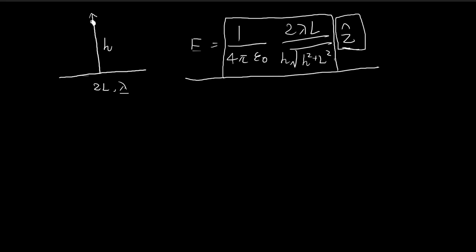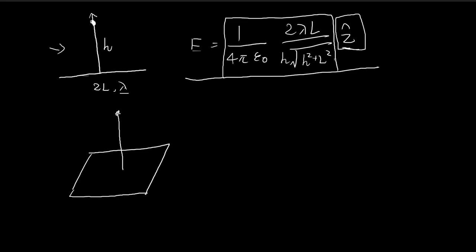This result is going to be useful when we solve this problem, because if you draw the configuration, you'll see that it's actually just a combination of 4 of these cases combined together. We're interested in the electric field at this point, at a distance z away from the center, where each side has a length of a. So we actually just have 4 line charges placed together.